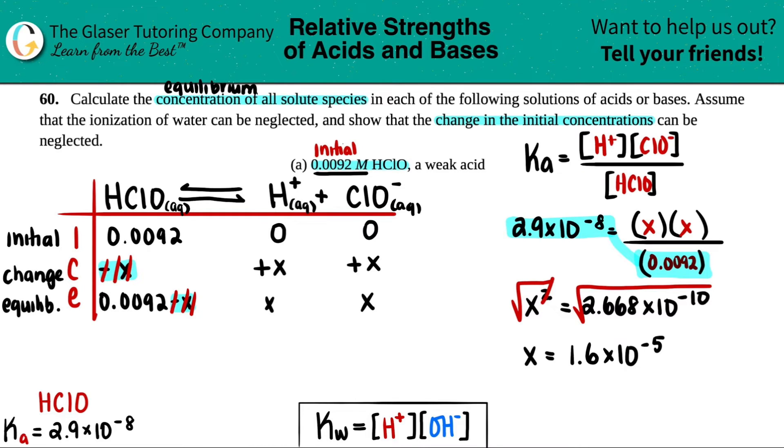So let's list what concentrations of all the solute species we have. The H plus concentration that we had, which was X, is the same as the ClO minus, right? They were both X. And since X was 1.6 times 10 to the negative fifth, that's what this is. And that's what this is, since they're both X. So I have 1.6 times 10 to the negative fifth molarity for both of them. So that's two of your answers. So that takes care of the products.